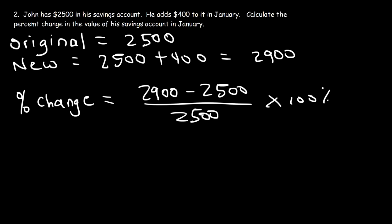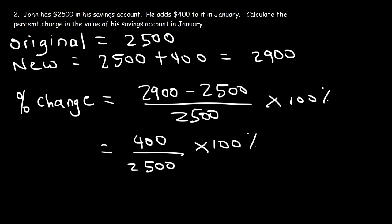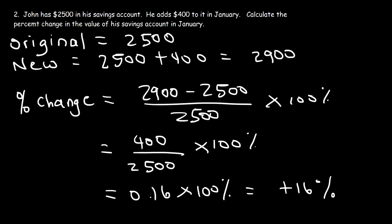Now let's calculate the percent change. It's the new value of $2,900 minus the original value of $2,500, divided by the original value, times 100%. $2,900 minus $2,500 is $400. $400 divided by $2,500 is 0.16. Multiply 0.16 by 100% and you get 16%. So this is a percent increase — his savings account went up by 16% during that month.